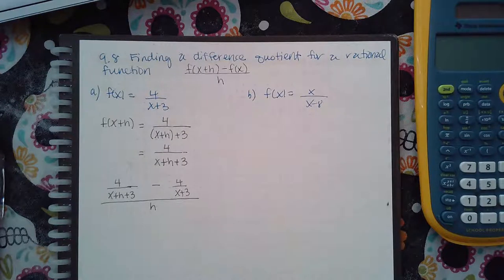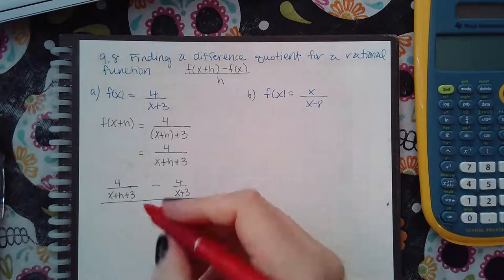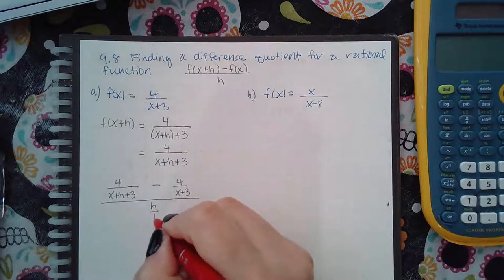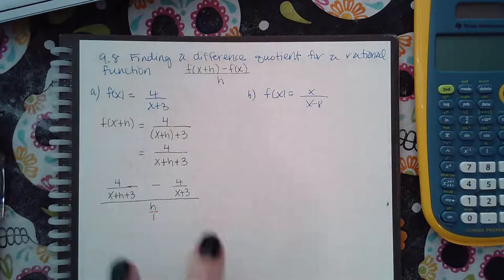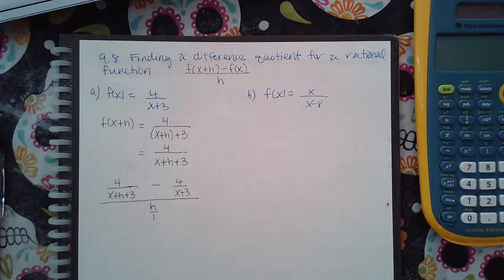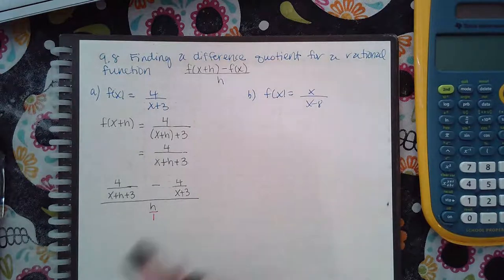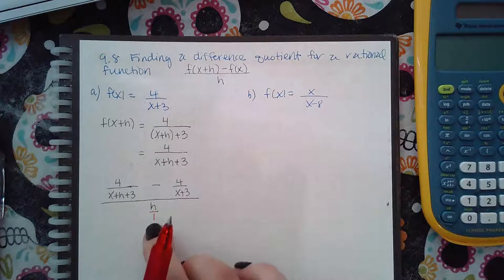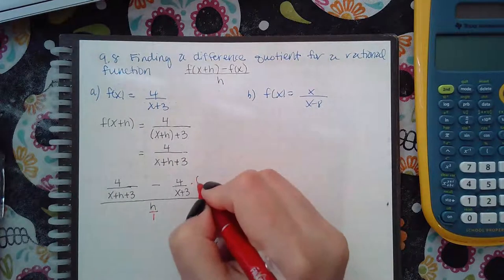This is a complex fraction. A complex fraction is a fraction within fractions. We have three fractions here: two fractions in the numerator and one fraction in the denominator. In order to make it no longer complex, we have to multiply by the common denominator of all three fractions. Since all of the denominators are different, we're going to have to multiply all three together.